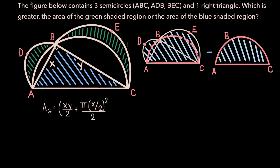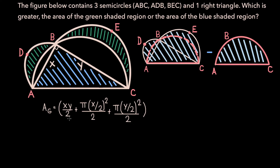As for the area of semicircle BEC, it's pretty similar. This semicircle has a diameter of y, so it has a radius of y over 2, and its area will be π times (y/2)² over 2, since this is also a semicircle. What's inside these two parentheses is the area of the entire figure. And so now, as illustrated in our figure, we need to subtract the area of semicircle ABC.